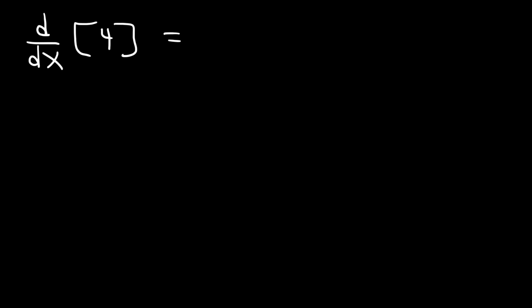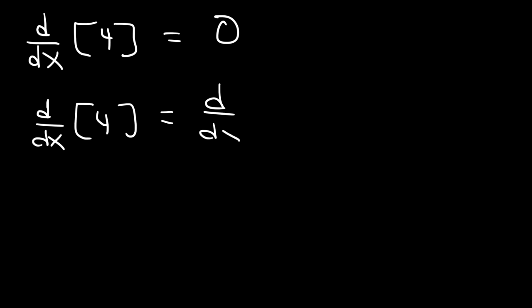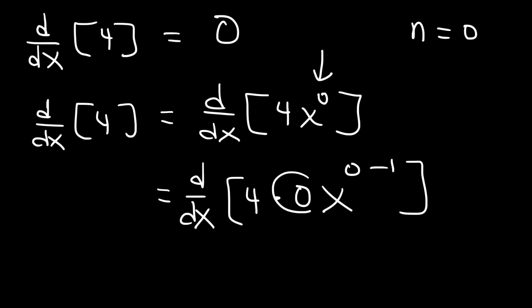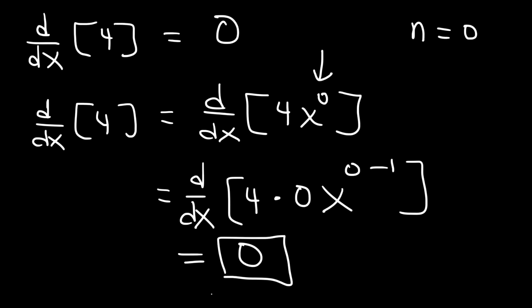Now what about the derivative of a constant like 4? The constant rule says the derivative of any constant is 0, but we can show this using the power rule. We rewrite 4 as 4x to the 0, since x to the 0 is 1 and 4 times 1 is 4. Now n is 0, so we get 4 multiplied by 0x to the 0 minus 1. Since 0 times anything is 0, the whole thing equals 0, confirming that the derivative of a constant is 0.